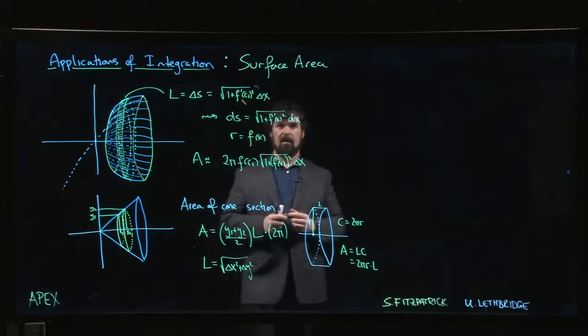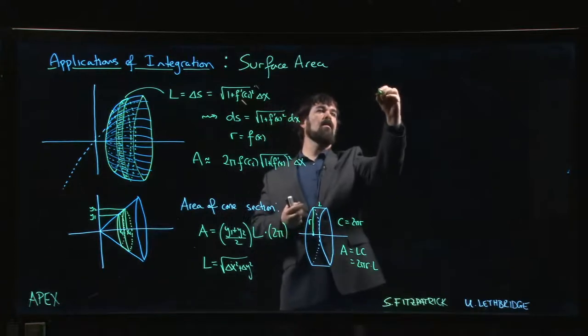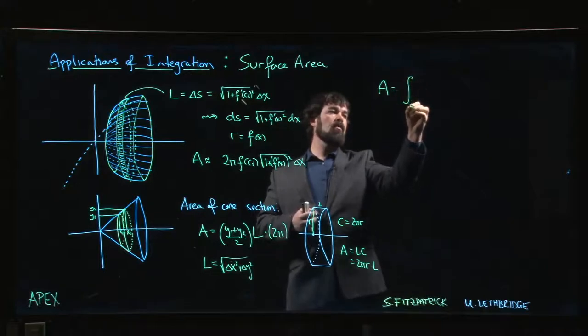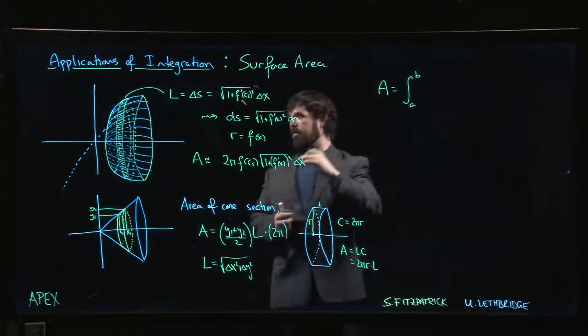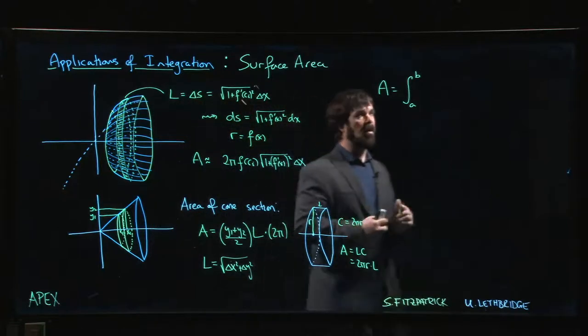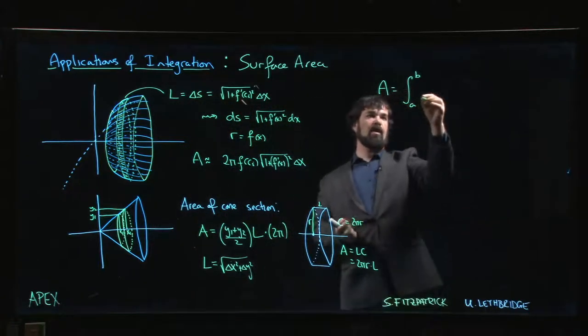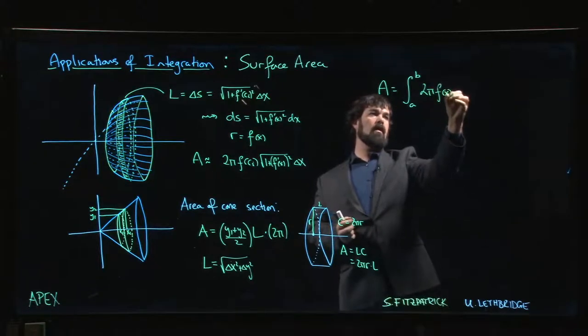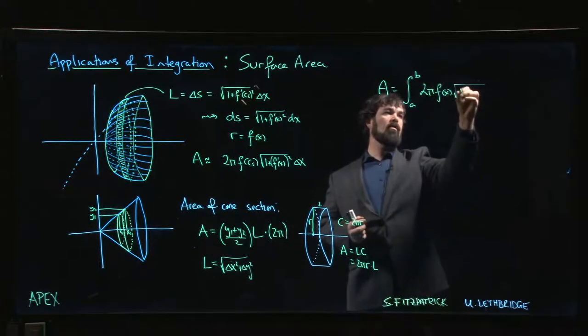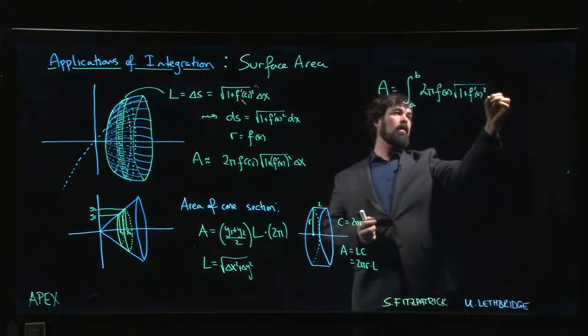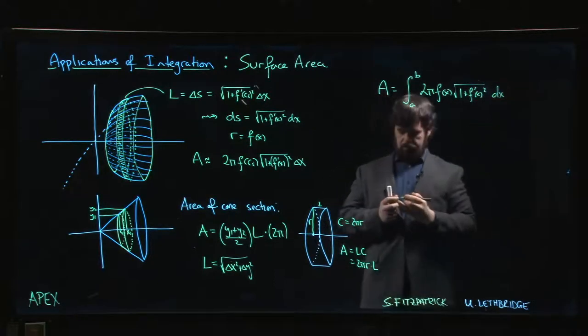And this should suggest that in the end, we get a formula for the surface area. So we set things up, take the limit, cut this into a whole bunch of strips, add them all up. We should get something that looks like the integral from A to B of 2π F of X times the square root of 1 plus F prime of X squared DX.